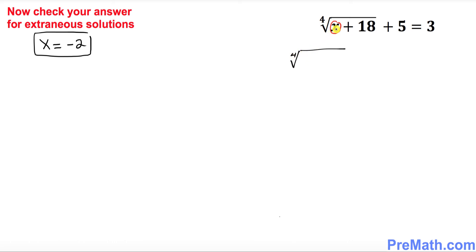So, fourth root of negative 2 plus 18, plus 5—is it equal to 3? Negative 2 plus 18 gives us 16, so fourth root of 16 plus 5—is it equal to 3? The fourth root of 16 is 2, so 2 plus 5—is it equal to 3?